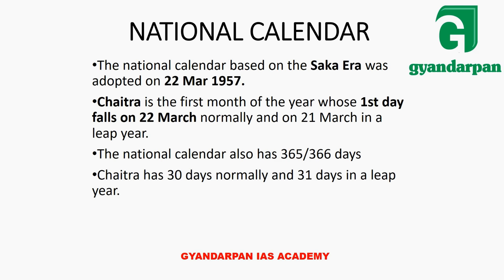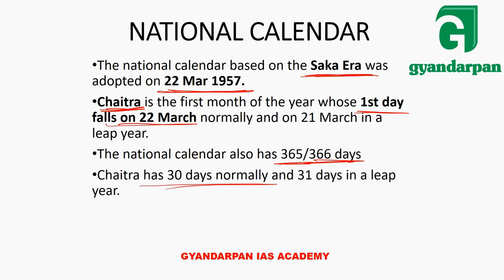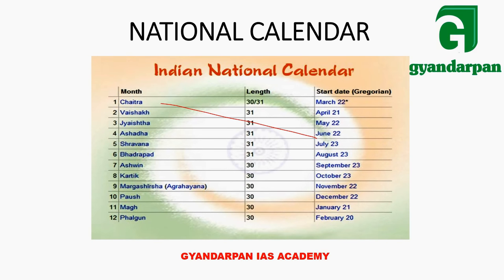Next is the National Calendar — the Saka era calendar. It was adopted on 22nd March 1957. The first month of the calendar starts from 22nd March (or 21st March in a leap year). The calendar has 365 days and 366 days in a leap year. Each chapter (month) has 30 days normally and 31 days in a leap year. You can expect cross-matching questions on the months of this calendar, such as matching March and February.